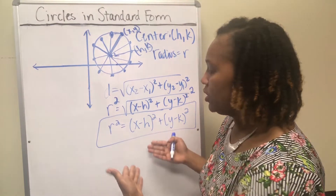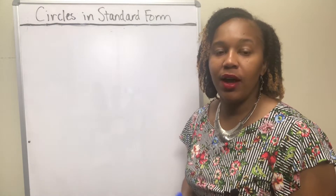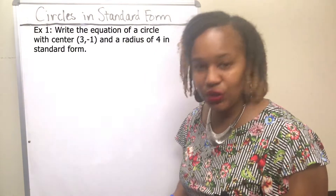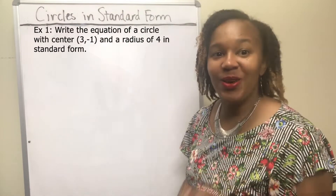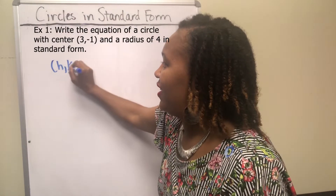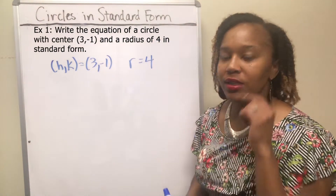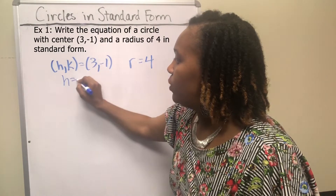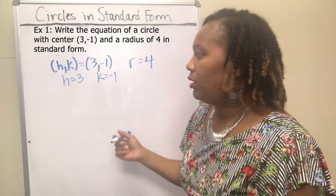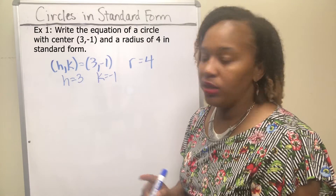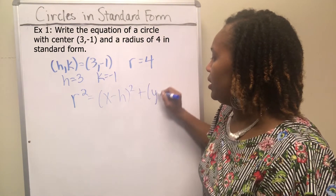For example 1, we want to write the equation of a circle in standard form that has a center of (3, negative 1) and a radius of 4. So our center H, K is (3, negative 1) and our radius R is 4. H is 3 and K is negative 1. We plug these into the standard form: R squared equals (X minus H) squared plus (Y minus K) squared.